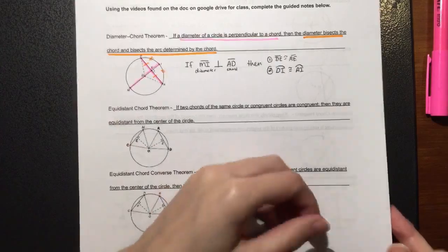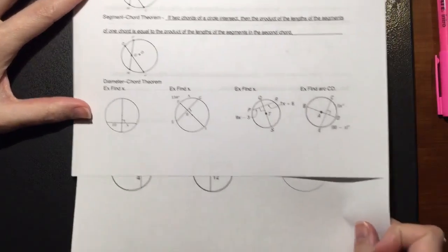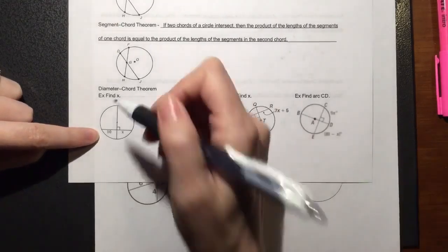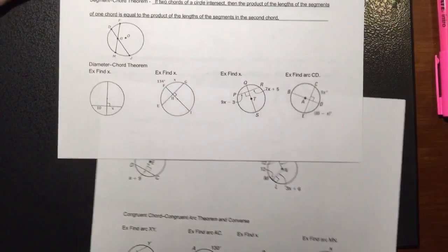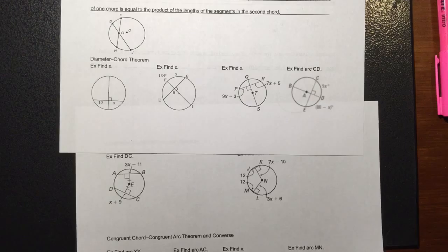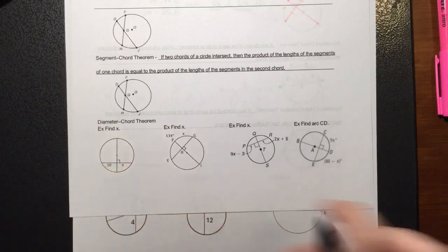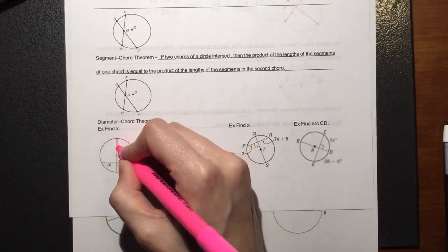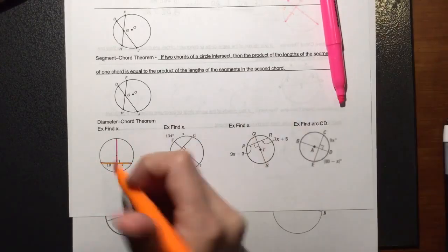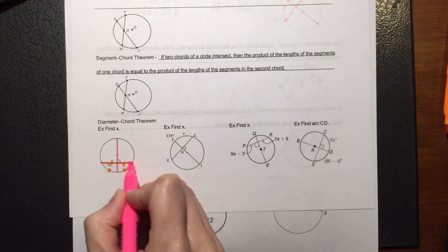Let's try out some examples of the Diameter Chord Theorem. This first one says find X. You're going to have to look at the picture and identify what parts you're working with so you know which theorem to use. Looking at this one, we've got our diameter here and our chord here, so that tells us this segment is going to be equal to that one — using the Diameter Chord Theorem.